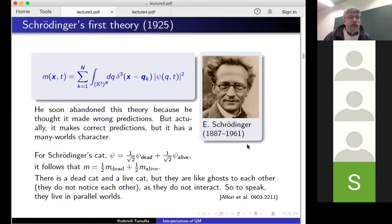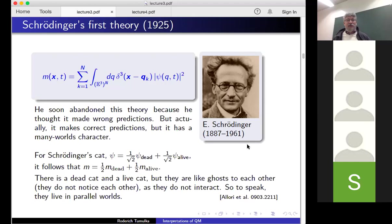Schrödinger proposed this theory in 1925, very shortly after he proposed the Schrödinger equation. But he soon abandoned this theory because he thought it made wrong predictions. Actually, it makes correct predictions — it just has a many worlds character. So let me talk about why this theory has a many worlds character and what the consequences of these equations are.